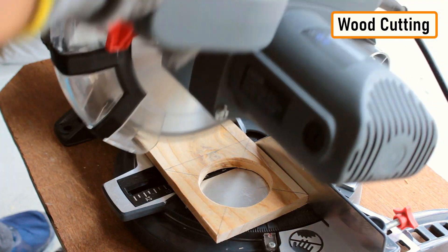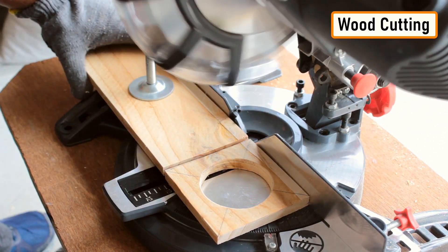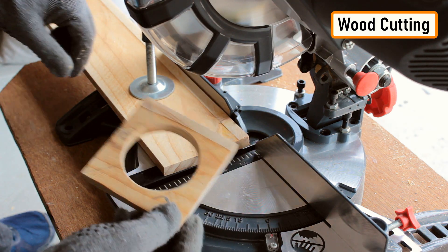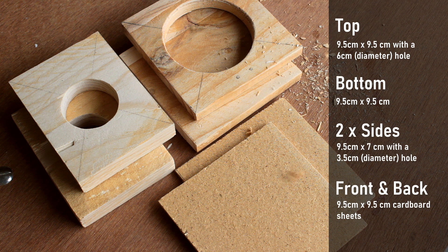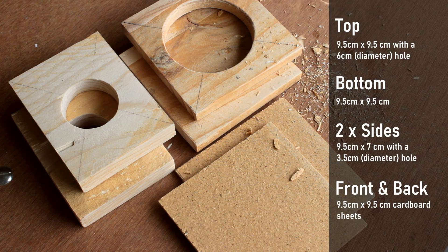After drilling the holes, let's extract the sides from the plank using a chop saw or a hand saw. My pallet plank is 9.5 cm wide and the lamp will be square in shape, so the rest of the measurements are all based on that.